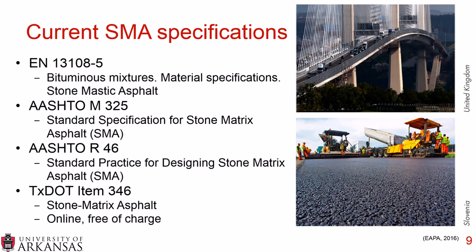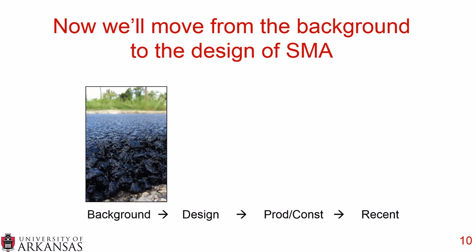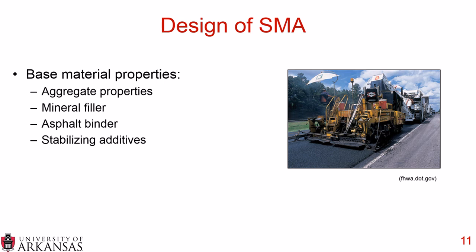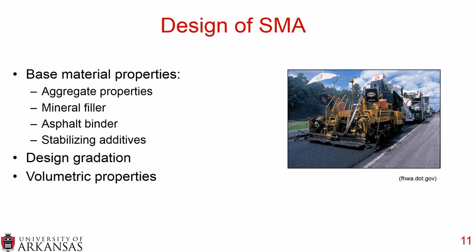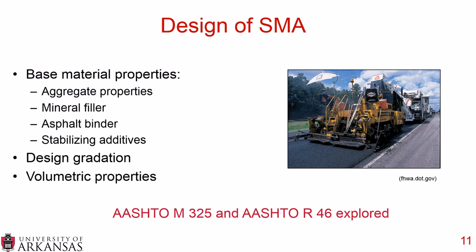That provides a little background, and now we move on to the design of SMA. When thinking about design, we need to find our base material properties — including aggregate properties, mineral filler or P200, asphalt binder, and any stabilizing additives. We need to determine the proper design gradation and volumetric properties. This section follows AASHTO M325 and R46.